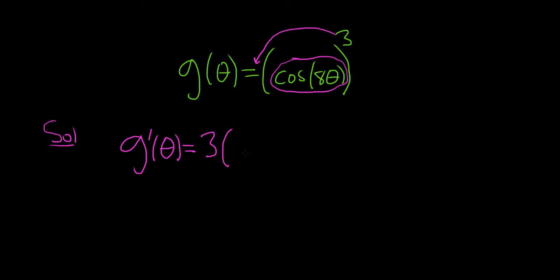parentheses, leave the inside untouched, so cosine 8 theta. Subtract 1. So now we've taken the derivative of the outside, and now we're going to multiply, times the derivative of the inside.